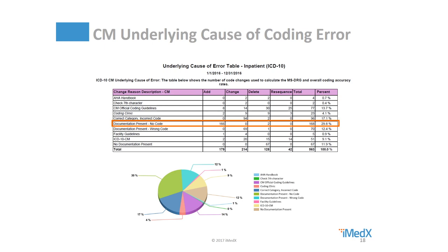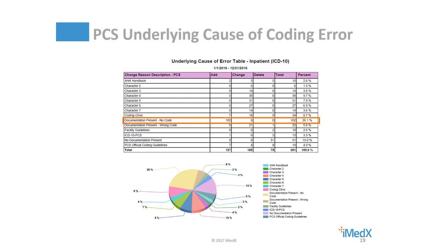The most common cause of ICD-10-CM coding errors is omission of a code when there was documentation present. For many facilities, it's important to identify why this is occurring — limited time to code per case, lack of knowledge of where to find documentation in the EMR, or missing documentation at the time of coding, such as a discharge summary not available at the time the coder completed the case. This was always the most common cause of ICD-9-CM coding errors as well. The second most common cause was assignment to the correct three-character category but incorrect selection of the specificity. For PCS, the most common cause of coding error was omission of a code when there was documentation to support a code assignment; the next most common was assigning a code when there was no documentation to support the code assignment.